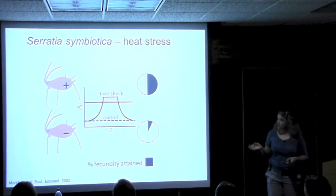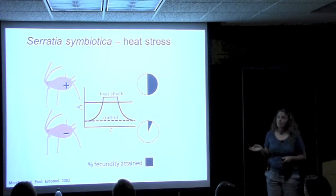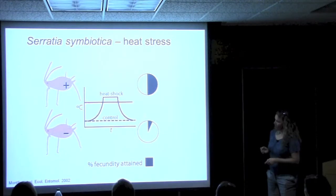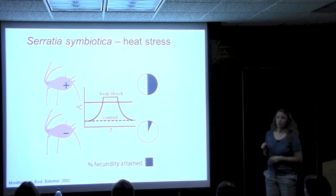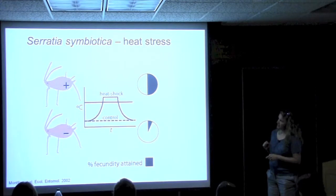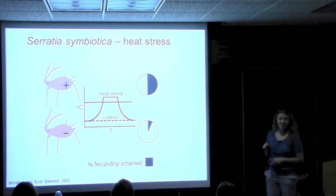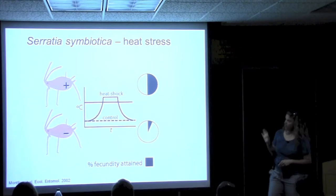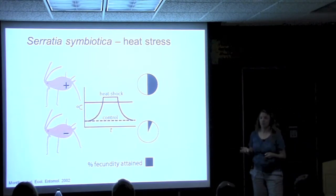Here's another symbiont, Serratia symbiotica, with another effect. In this case the bacteria is protecting its aphid host against heat shock. An aphid lacking the symbiont given a blast of heat is afterwards virtually all sterile — not able to reproduce. But in contrast, one that has Serratia gets the same treatment and, compared to an aphid that does not get the heat shock, fecundity is reduced but not nearly to the same degree. The bacteria is giving it some protection from an environmental condition.